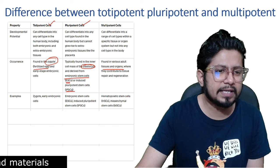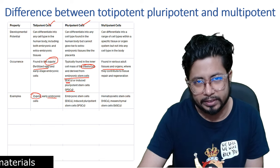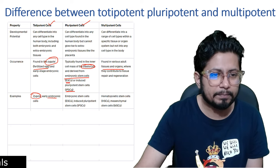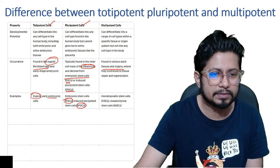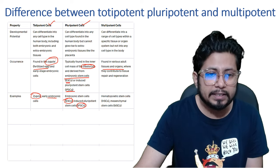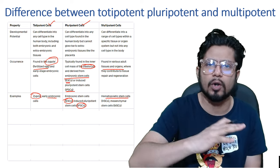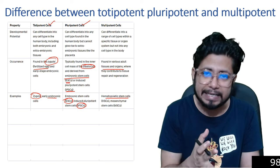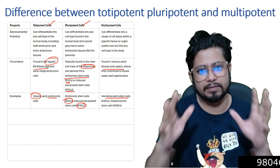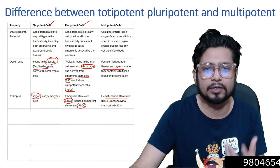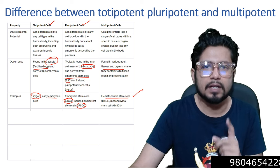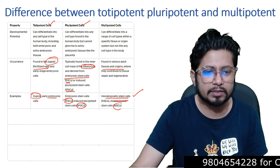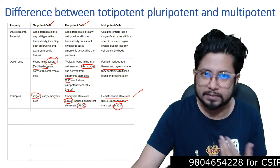Examples: totipotent cell examples — zygote and early embryonic cells, which can give rise to embryonic tissue as well as extra-embryonic tissue. Pluripotent cell examples — embryonic stem cells (ESCs) and induced pluripotent stem cells (iPSCs). Multipotent stem cell examples — hematopoietic stem cells (HSCs), which give rise to all types of cells of our blood and circulatory system: red blood cells, platelets, lymphocytes — all produced from the same lineage. You also have mesenchymal stem cells (MSCs). HSCs and MSCs are both examples of multipotent cell types.